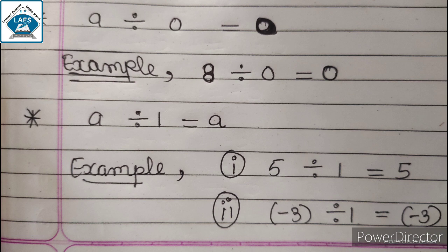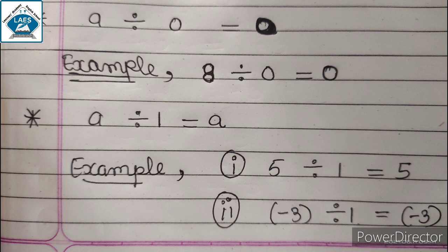Next property: A divided by 1 equals A. जब भी कोई integer को 1 से divide करते हैं, तो वही integer answer आता है. For example, 5 divided by 1 equals 5. Also, minus 3 divided by 1 equals minus 3. If a negative number is divided by 1, the negative sign remains and the answer is the same integer.